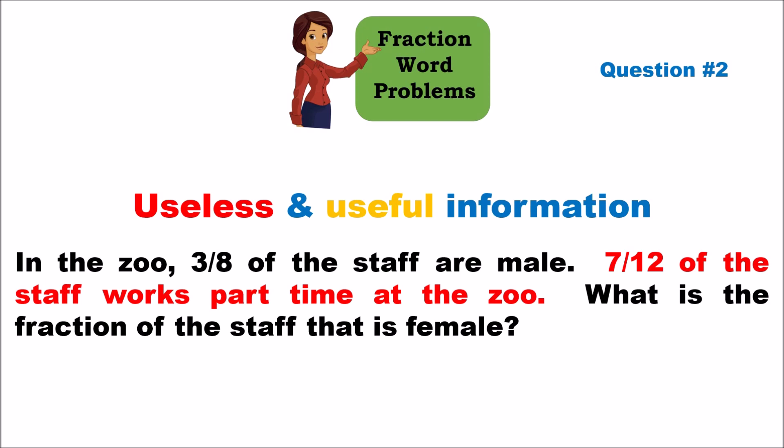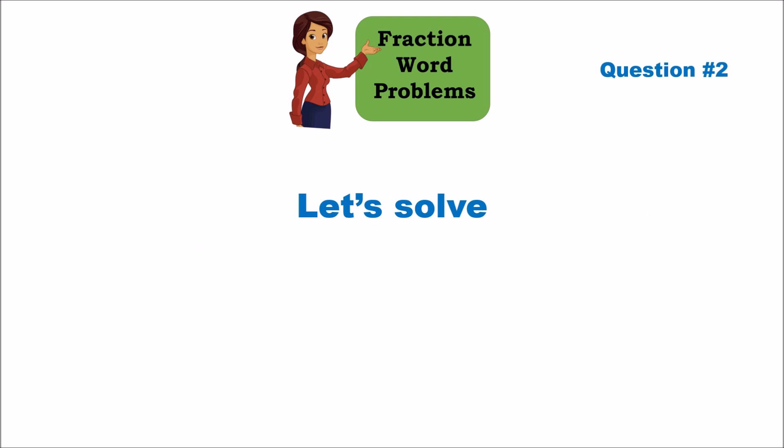The useful information is that three-eighths is male, so the balance is all female. We take 1 and subtract three-eighths from it to get the fraction of female staff. So it's 1 minus three-eighths. Whenever you have a whole number like 1, the denominator is 1 — so this is one over one minus three over eight.